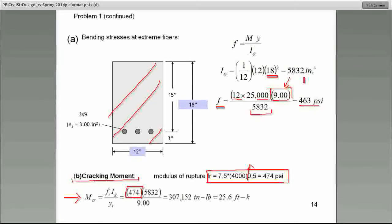Would you do me a favor and correct that? So it's f r. The value is correct. It's just the equation. So it's 7.5 times the square root of 4,000.